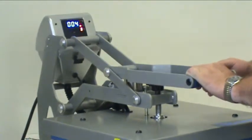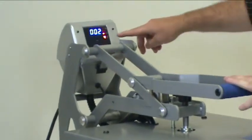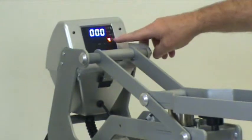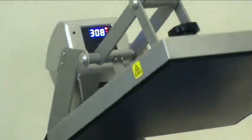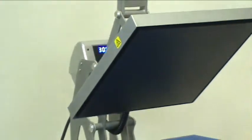I get a digital readout that no other press has, at least not factory-made, right here in this red display. It tells me what my pressure is, whether it's light, medium, or firm, and one through nine gives you those indications.